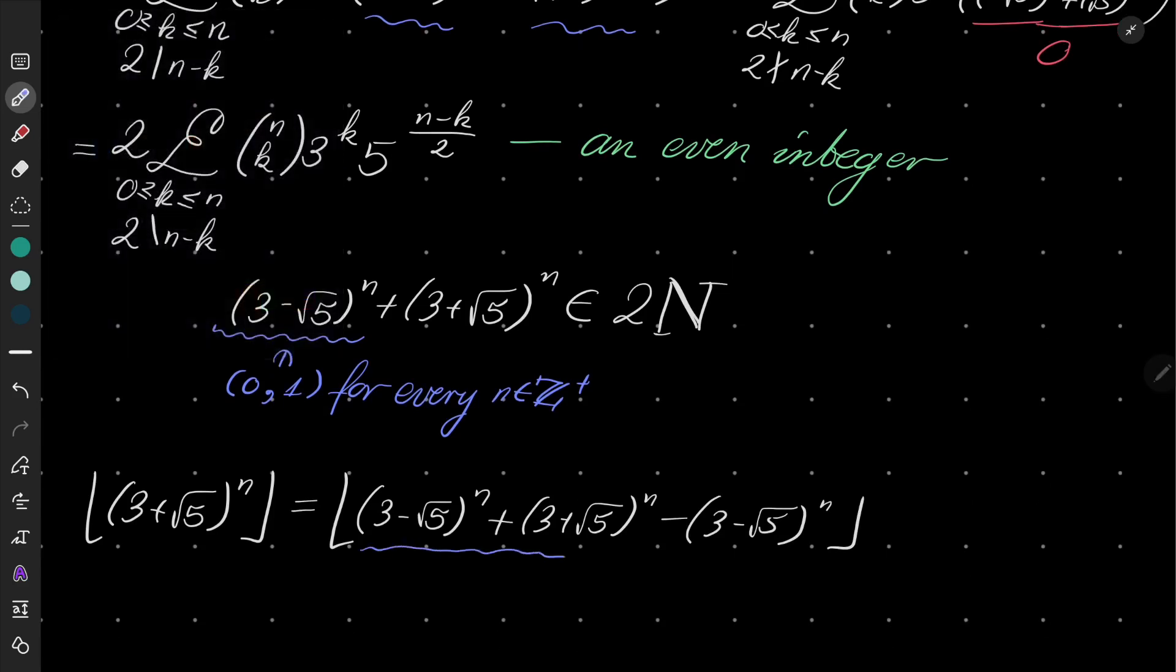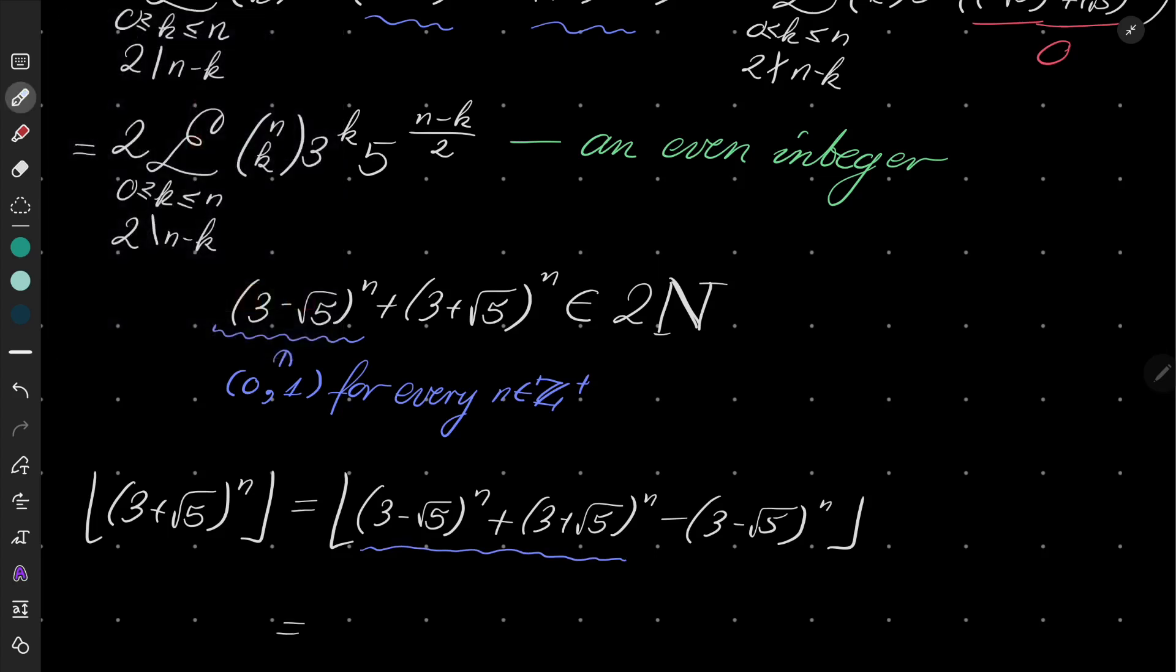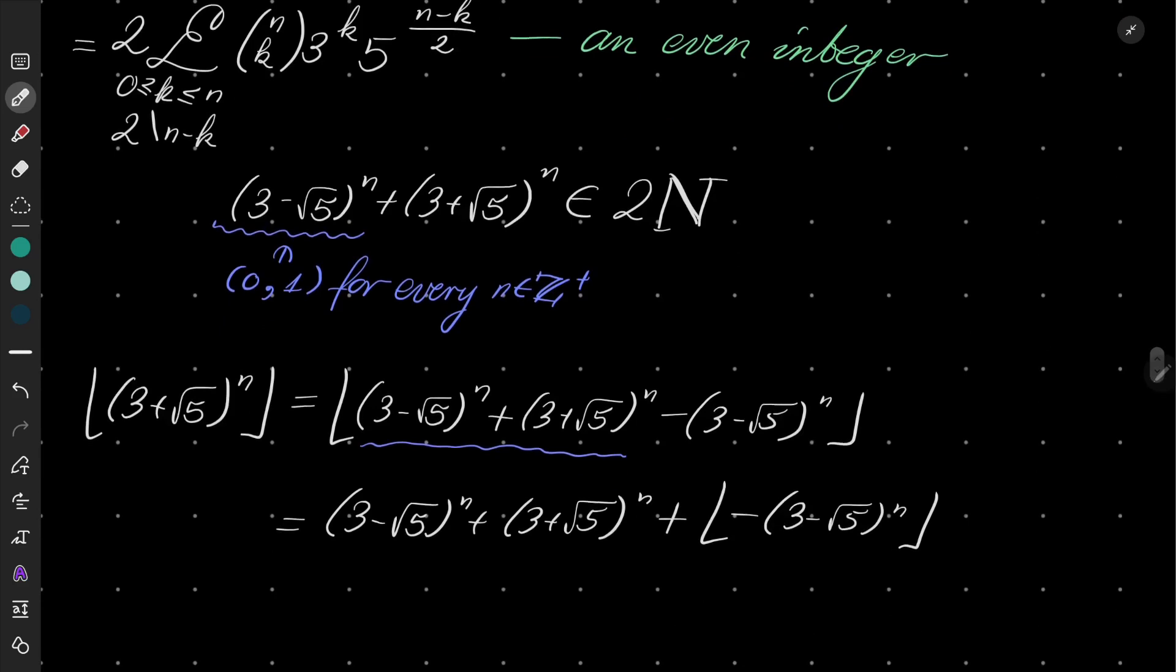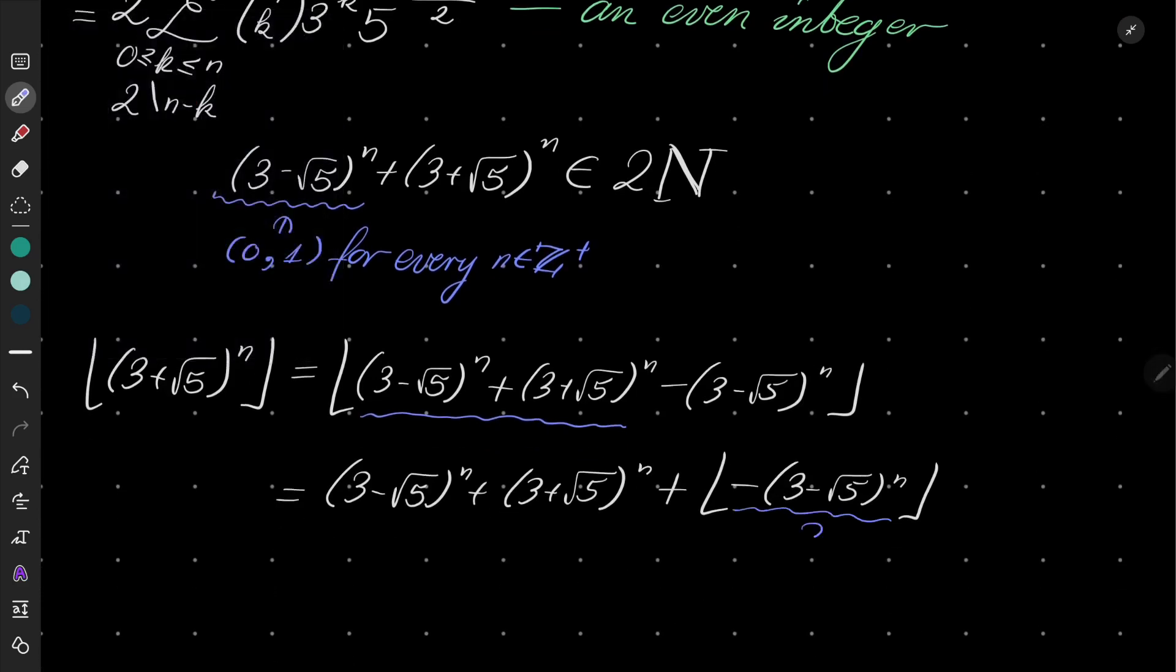And now, we will write it as the floor of [(3 - √5)^n + (3 + √5)^n] + floor of [-(3 - √5)^n]. And now, because of this minus, this number is between -1 and 0. The floor of a number between -1 and 0 is -1.